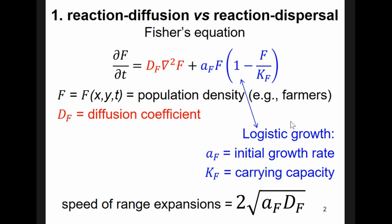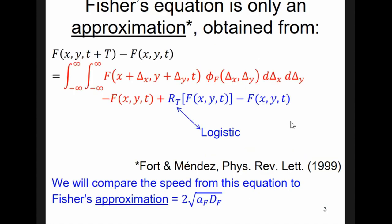The faster the reproduction, the higher the value of a_F, the initial growth rate, and the faster the range expansion. And similarly, the farther away humans move per generation, the larger the diffusion coefficient and the faster the expansion. This is very reasonable, but in fact, there is an important fact that is not very well known.